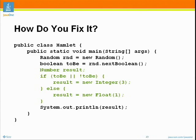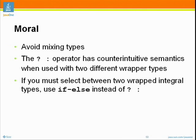What can we learn? Avoid mixing types. The ternary operator has counterintuitive semantics when used with two different wrapper types. If you must select between two different wrapped integral types, use if-else rather than the ternary operator. The ternary operator is very useful when used on two objects of the same type — feel free to use it under those circumstances. It's just these odd mixtures of wrapper types where it really screws up.